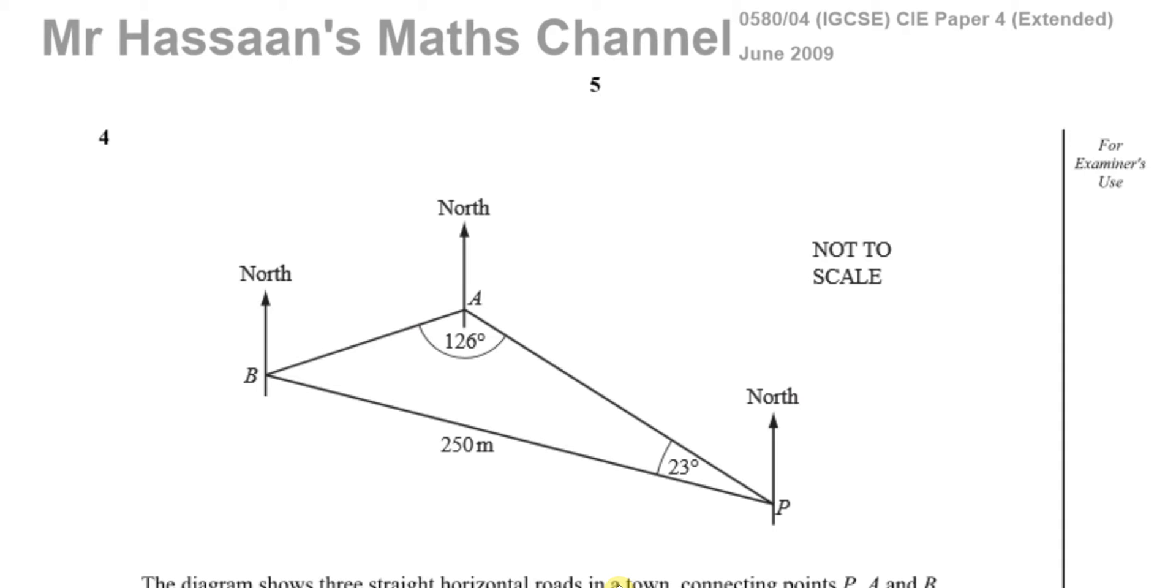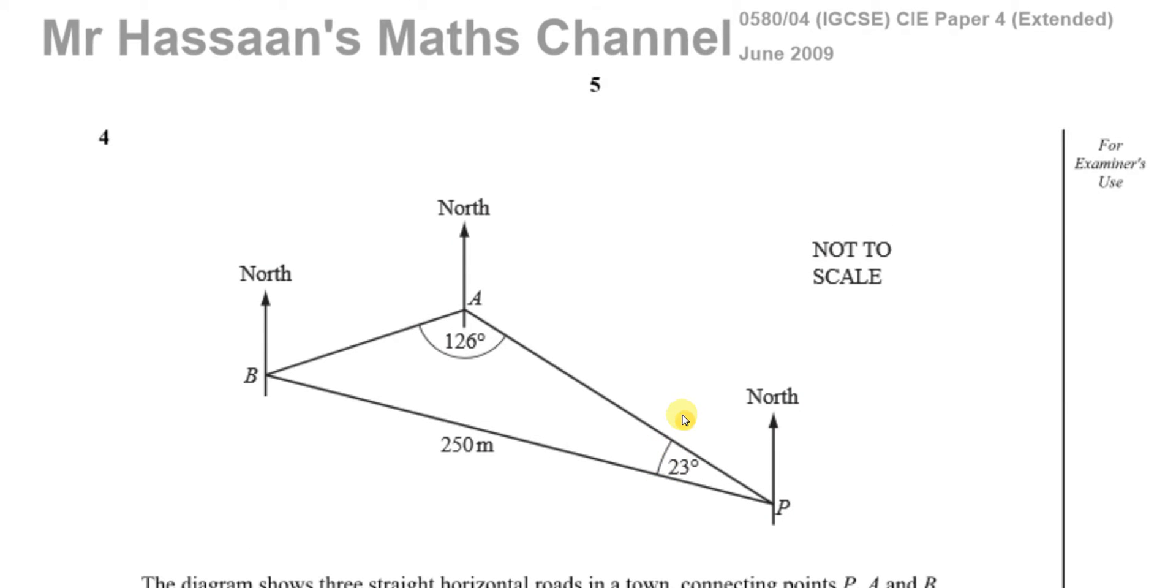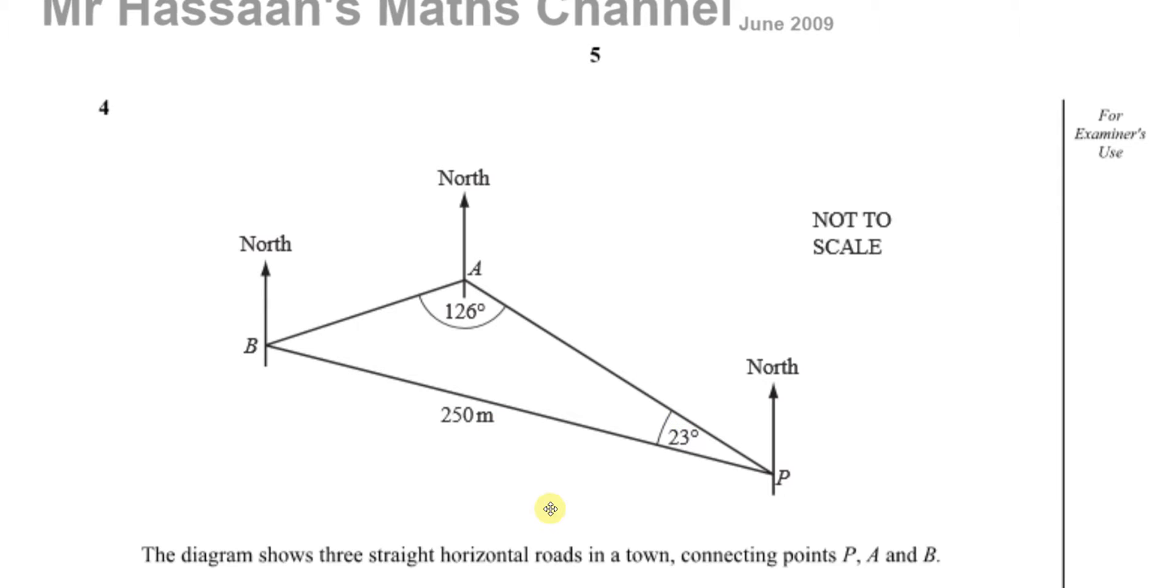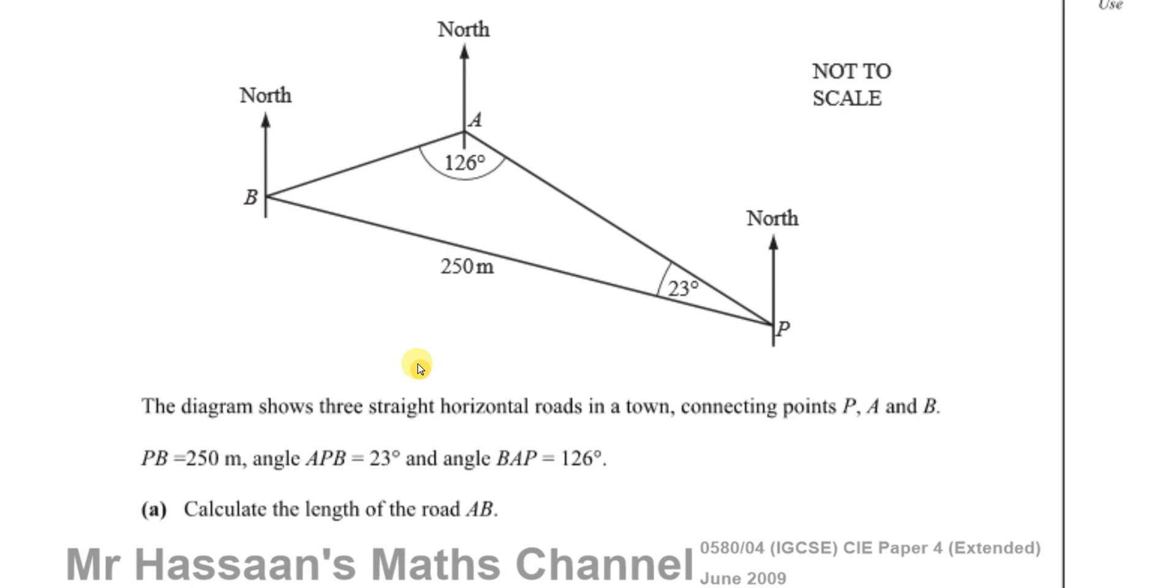This question is about trigonometry and bearings. The diagram shows three straight horizontal roads in a town connecting points P, A and B. We're told that PB is equal to 250 metres.